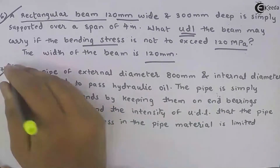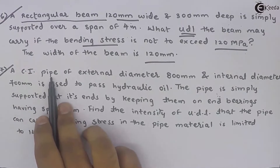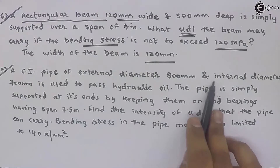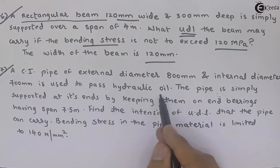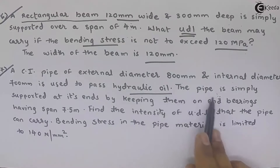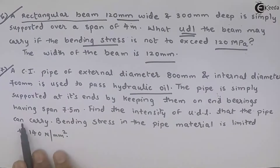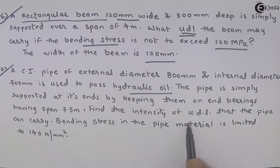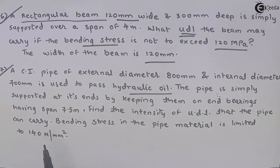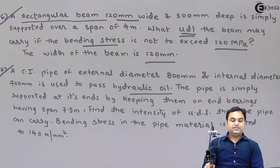We are solving question number seven. A cast iron (CI) pipe of external diameter 800 mm and internal diameter 700 mm is used to pass hydraulic oil. The pipe is simply supported at its ends on bearings having a span of 7.5 meters. Find the intensity of UDL that the pipe can carry. Bending stress in the pipe material is limited to 140 Newton per mm².